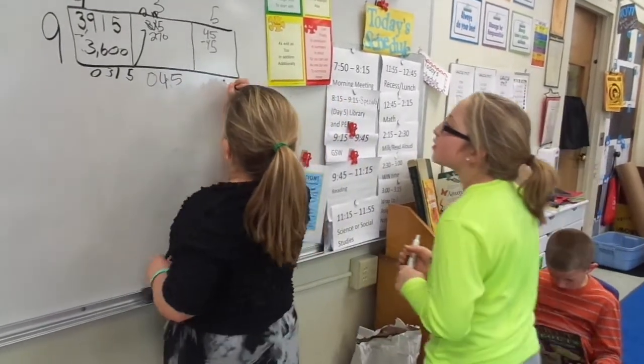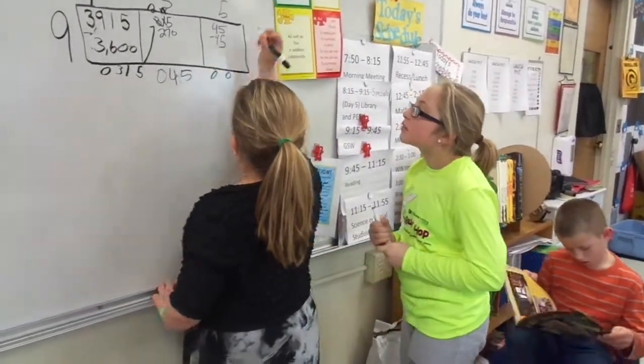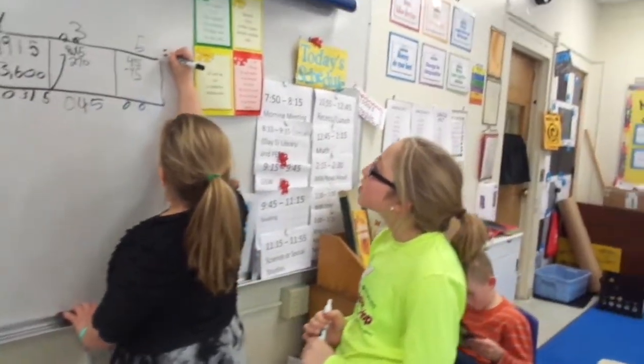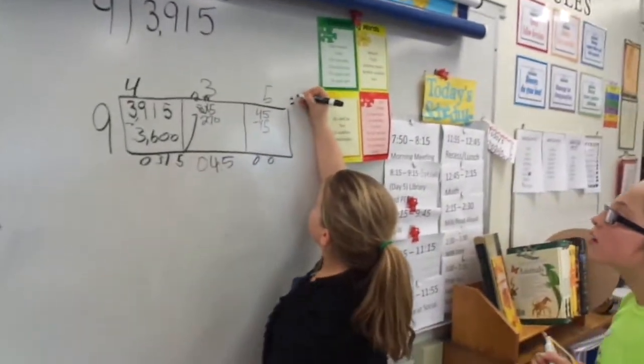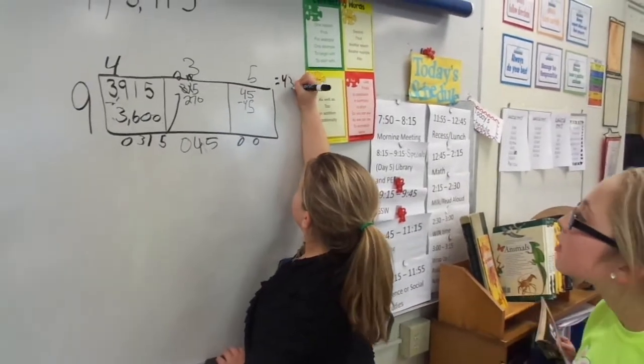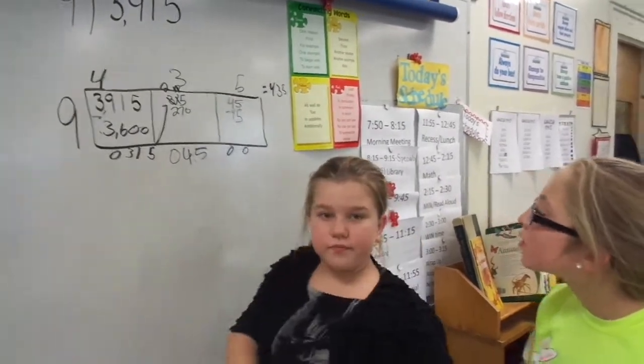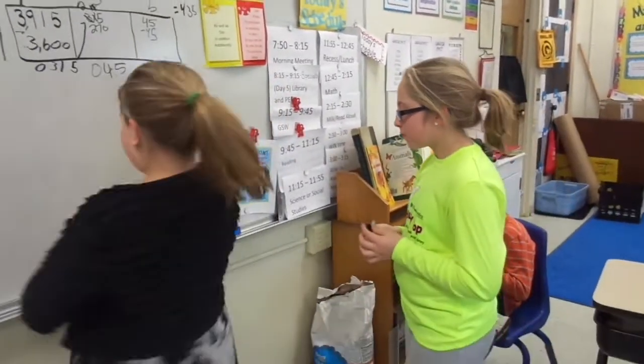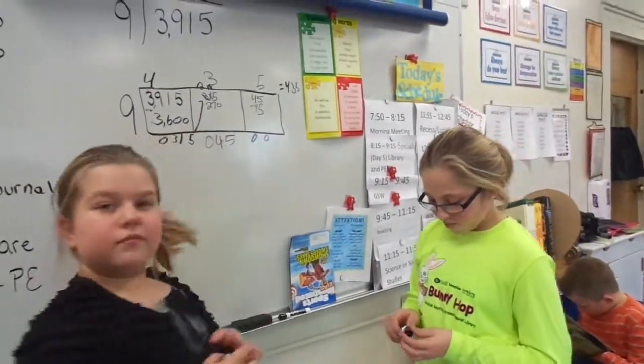And then that would be 0. So what is my actual quotient? The actual quotient would be 435. Excellent job, girls. Place value section method.